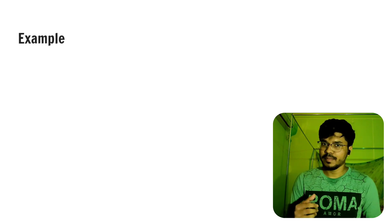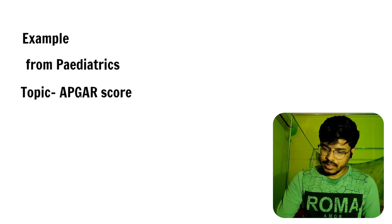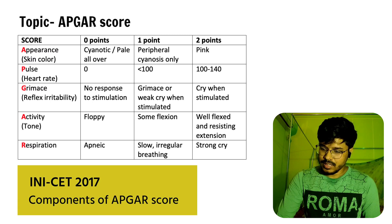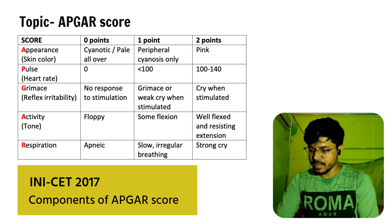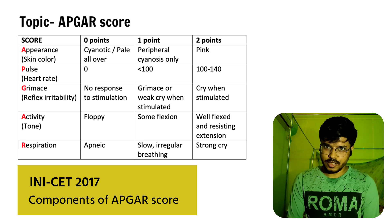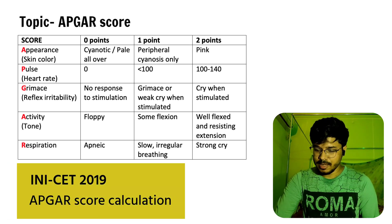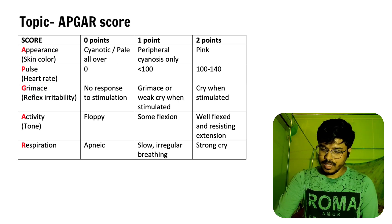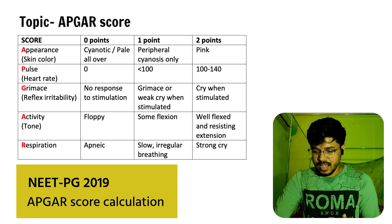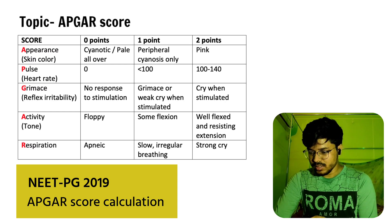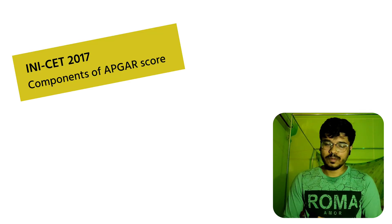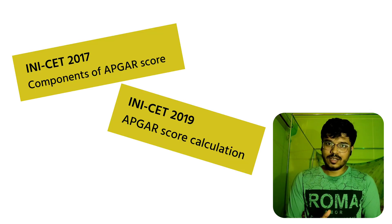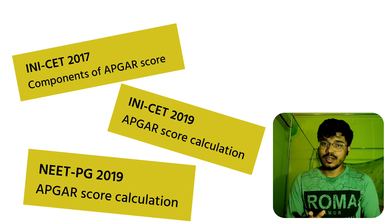Let's talk about another example from Pediatrics. In INICPG 2017, they asked the components of the Apgar score. The components are Appearance, Pulse, Grimace, Muscle tone, and Respiratory efforts. In INICPG 2019, they gave a clinical situation and asked to calculate the Apgar score. In another question in the same paper, they again asked a clinical question to calculate the Apgar score. The topic is Apgar score — it is repeatedly asked, but the questions are not the same.